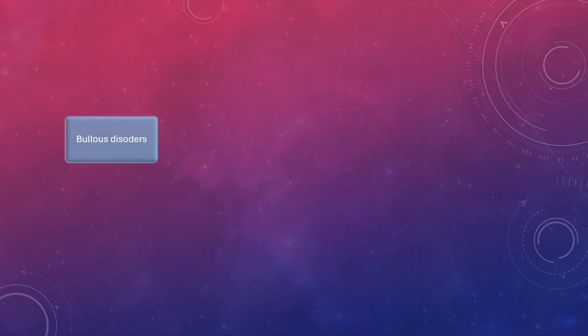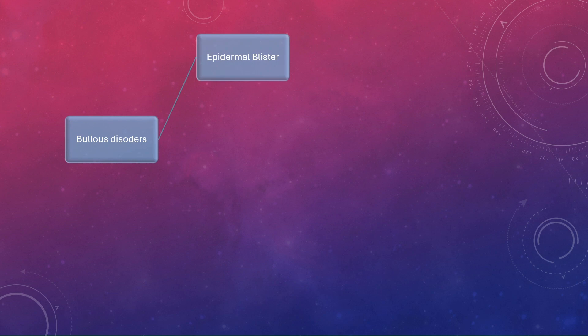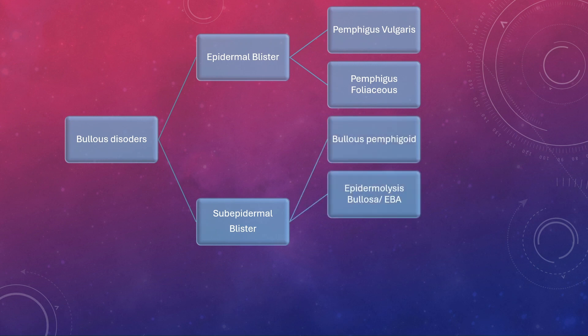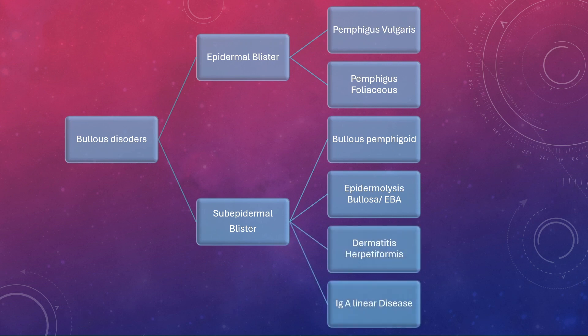The bullous disorders are of two types: one having an epidermal blister and second having a sub-epidermal blister. The epidermal blister diseases are pemphigus vulgaris and pemphigus foliaceus. The rest — bullous pemphigoid, epidermolysis bullosa, epidermolysis bullosa acquisita, dermatitis herpetiformis, and IgA linear disease — all have a sub-epidermal blister.